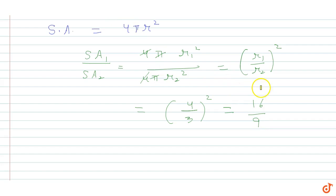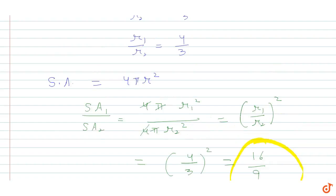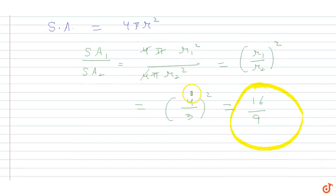In summary, we were given the ratio of the volumes of two spheres, from which we determined the ratio of their radii, and then calculated the ratio of their surface areas, which is 16 to 9.